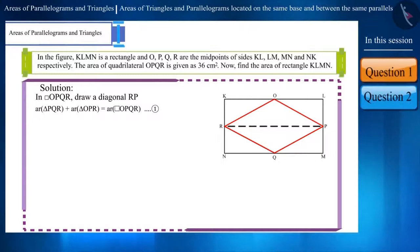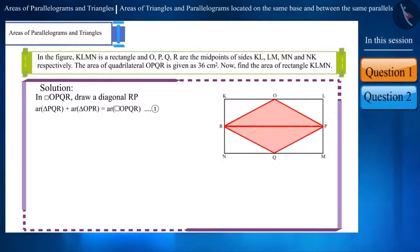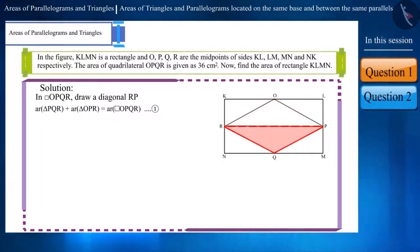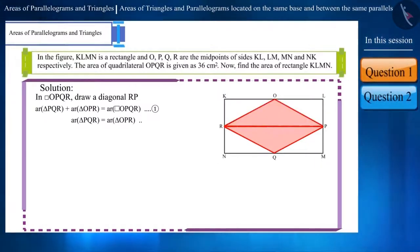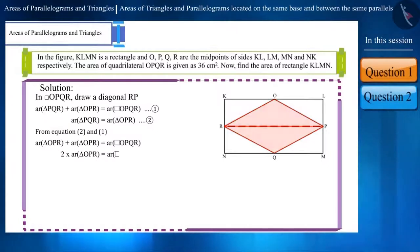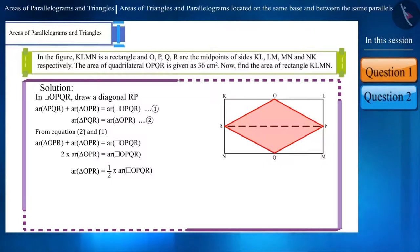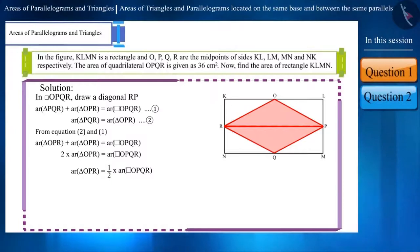A diagonal of a parallelogram divides it into two congruent triangles, and the area of congruent shapes is equal. Therefore, the area of triangle PQR will be equal to the area of triangle OPR, and it will be half the area of parallelogram OPQR. Thus, we get the area of each of these two triangles as 18 cm².